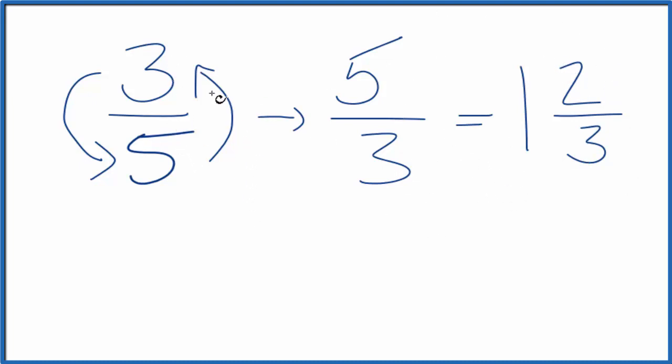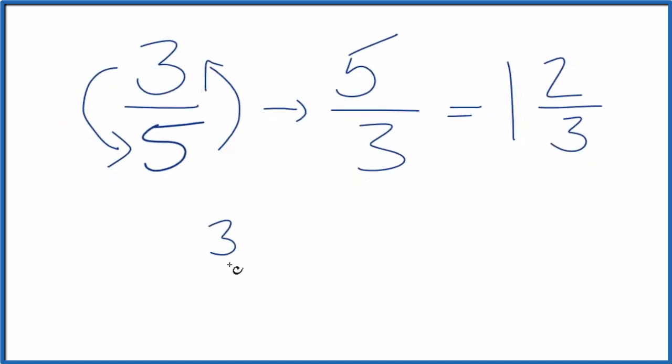Let's check our work. We take our 3 fifths that we started with and multiply that by the reciprocal. If we did the first part correctly, that should equal 1. 3 times 5 is 15.